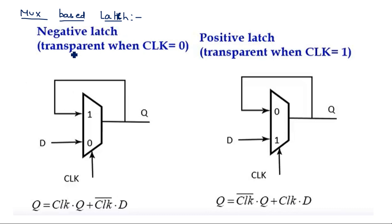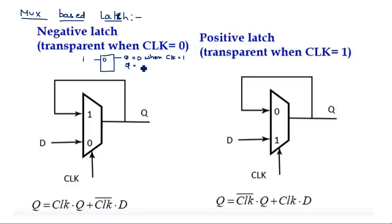A negative latch is transparent when clock equals zero, meaning output equals input. To understand MUX-based latches, recall the basic latch operation: a latch is like a D flip-flop where Q equals D when clock or enable is equal to one, and Q holds its previous state when enable is equal to zero.